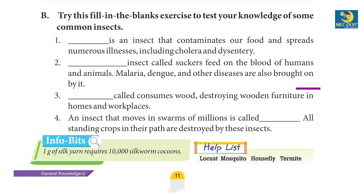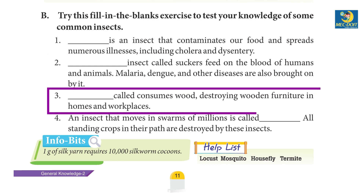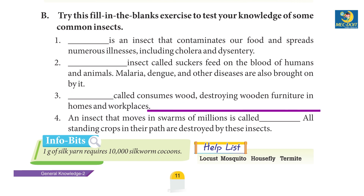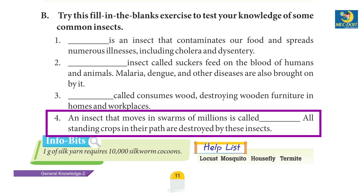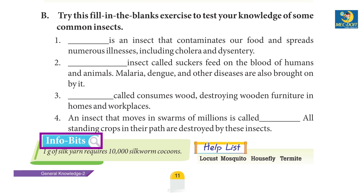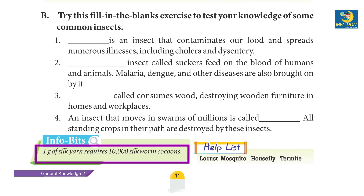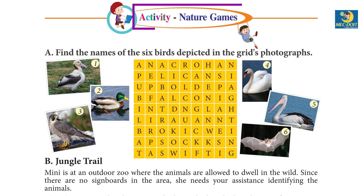Number three: termite, called a wood consumer, destroys wooden furniture in homes and workplaces. Number four: an insect that moves in swarms of millions — all standing crops in their path are destroyed by these insects. Info bits: one gram of silk yarn requires 10,000 silkworm cocoons.